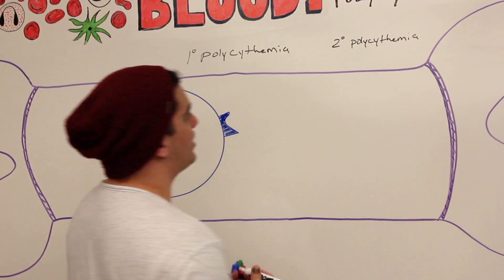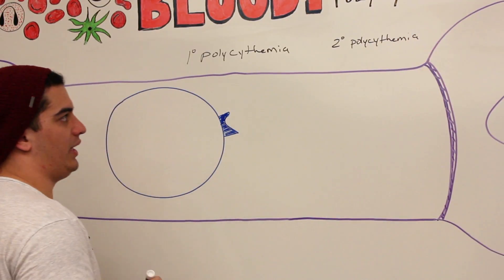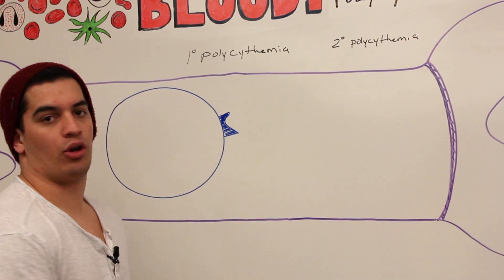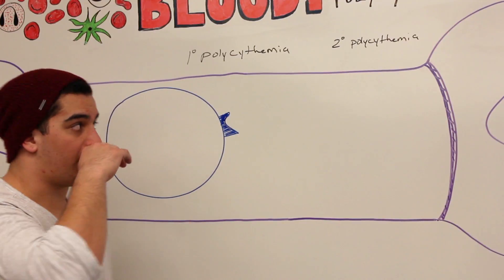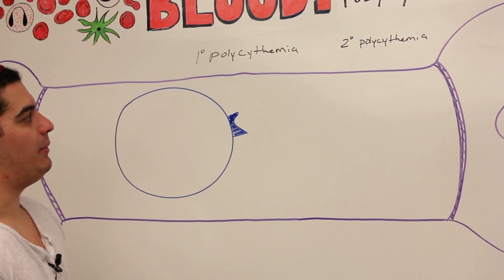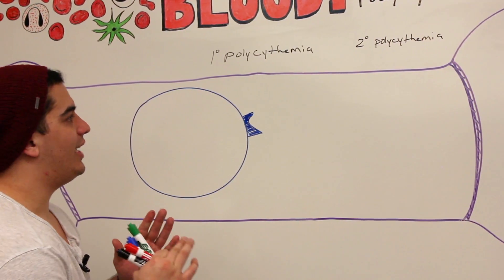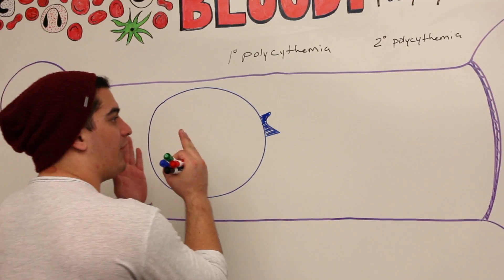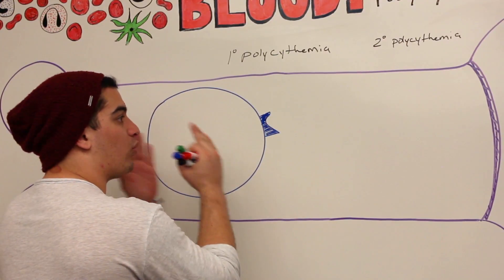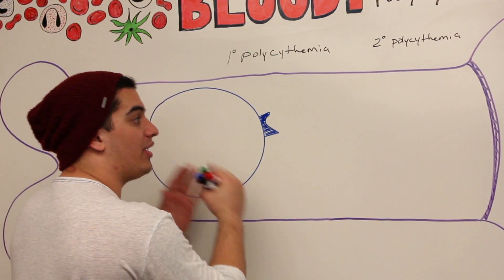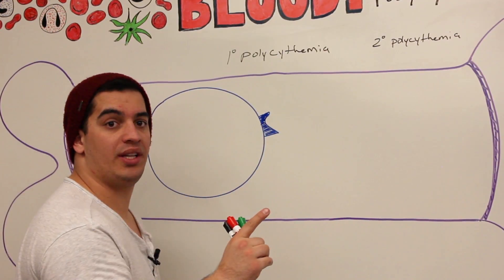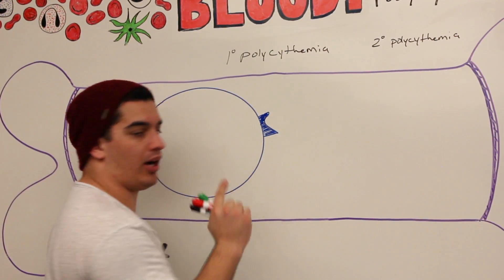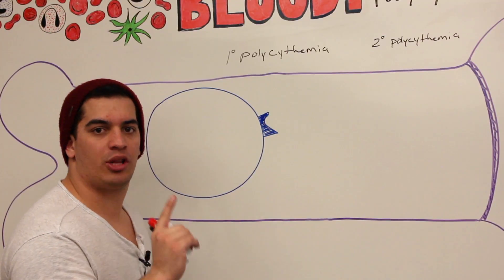We'll discuss the differences between these two, and then we'll talk about a special thing called blood doping. So first off, primary polycythemia — what is the issue with this? Primary means it's actually having a problem with red blood cell production, erythropoiesis. So it's occurring in the bone marrow.